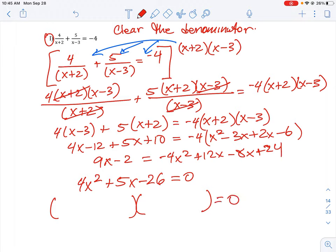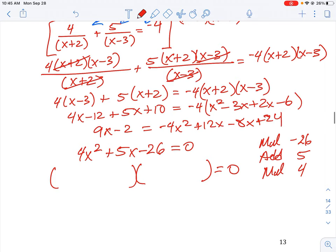Okay, and what we are looking for is the same kind of idea here. We're looking for two factors that multiply to give you negative 26, that add to give you 5, and that you multiply to give you 4. Okay, so we'll have to work out some combinations to see what that goes and how you're going to get that.